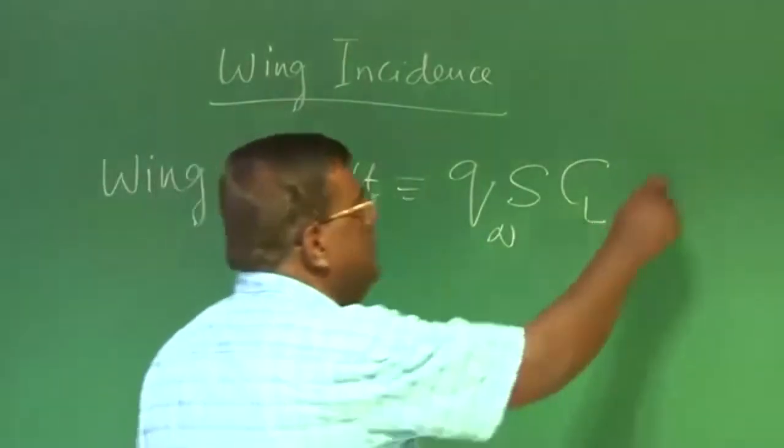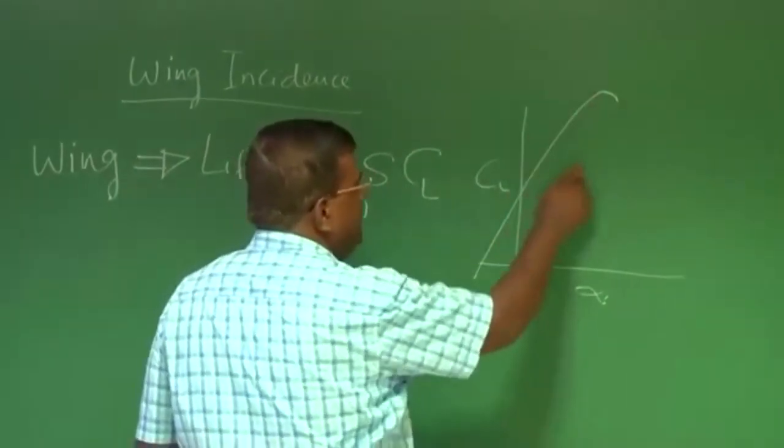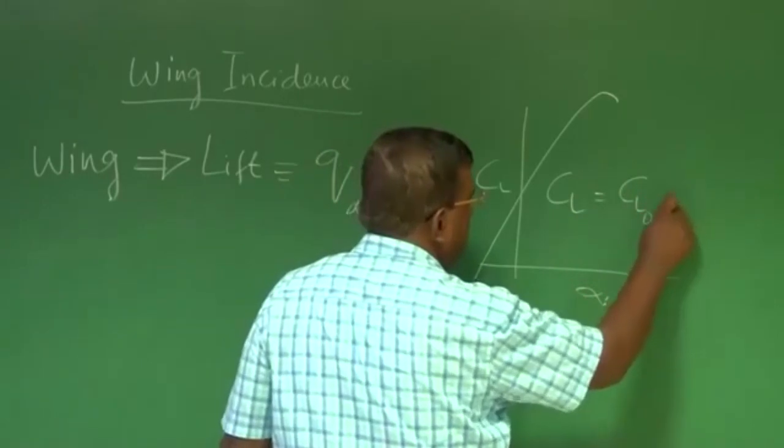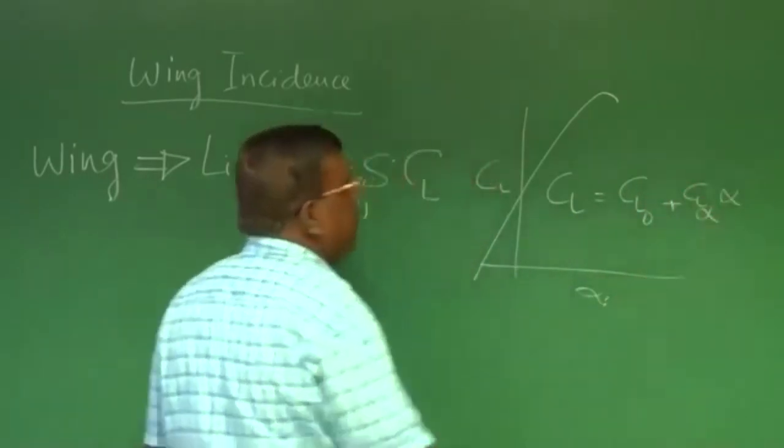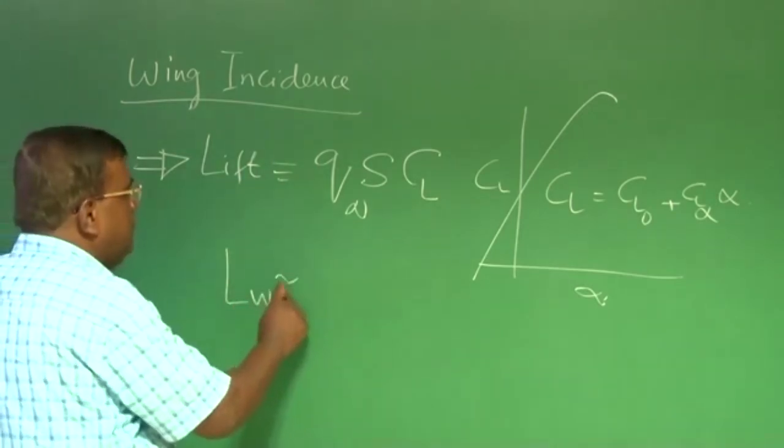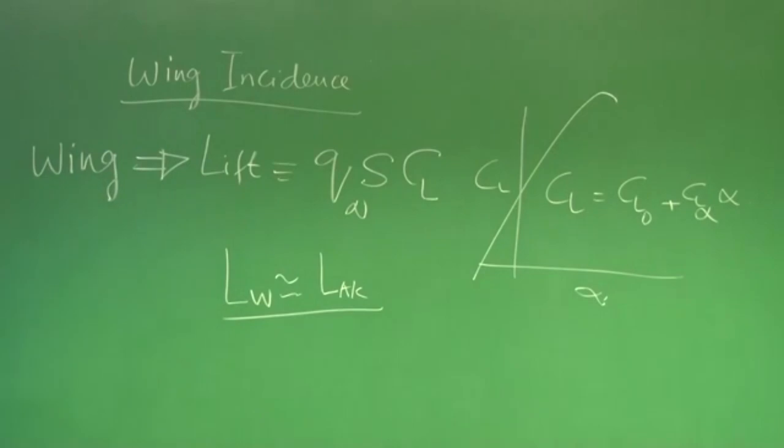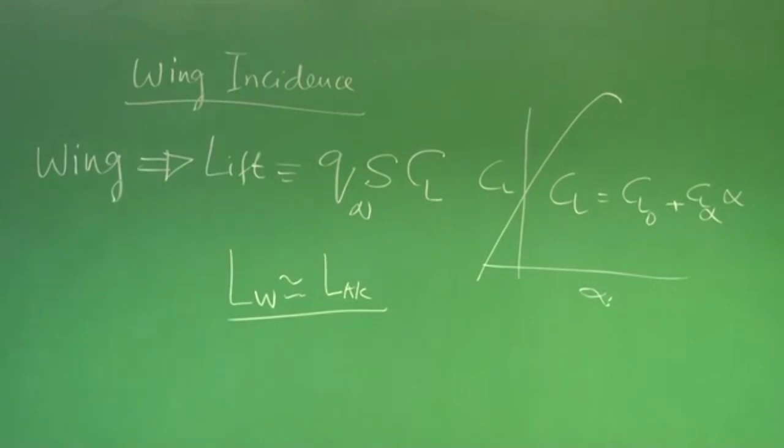And Cl is, depending upon type of airfoil you are using, Cl is Cl naught plus Cl alpha into alpha. At the initial stage or during conceptual stage, we can assume that lift on the wing is approximately same order as lift on the whole aircraft. Although we understand lift on the whole aircraft is summation of lift on the wing, on the horizontal tail, the fuselage, canard. But initially, you just think the majority part is wing.